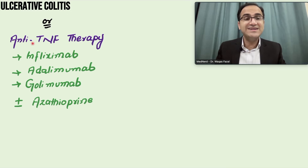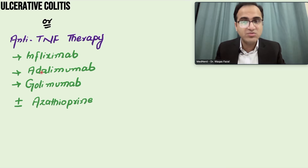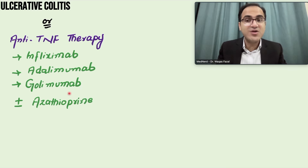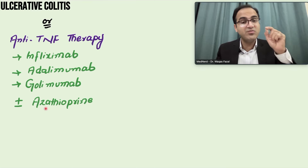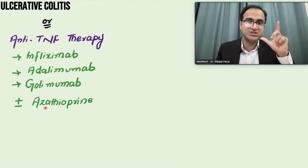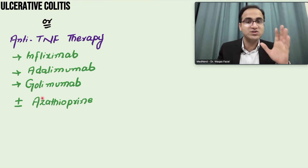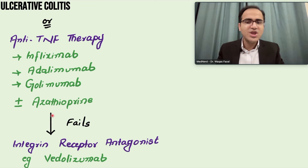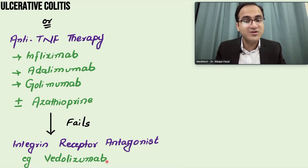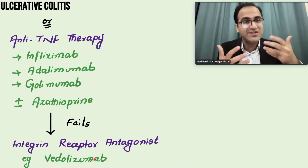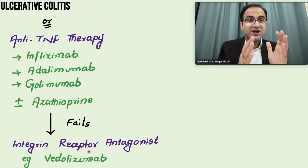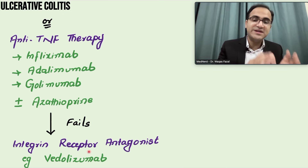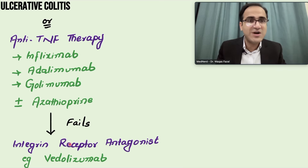For moderate to severe disease, anti-TNF therapy includes infliximab, adalimumab, and golimumab with or without azathioprine. Infliximab in combination with azathioprine is used in induction therapy; azathioprine monotherapy cannot be used for induction but can be used alone for maintenance. If the patient fails anti-TNF therapy, integrin receptor antagonists like vedolizumab are available — monoclonal antibodies that bind to molecules involved in gut inflammation.